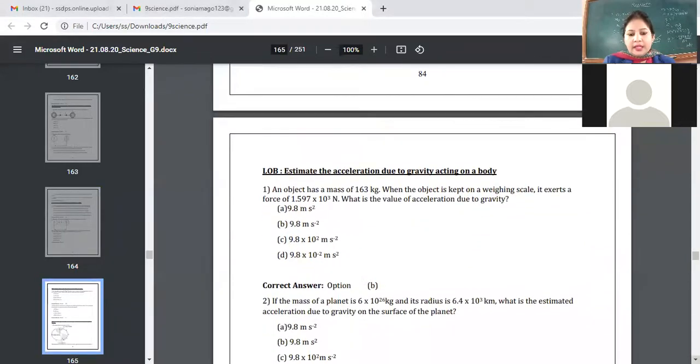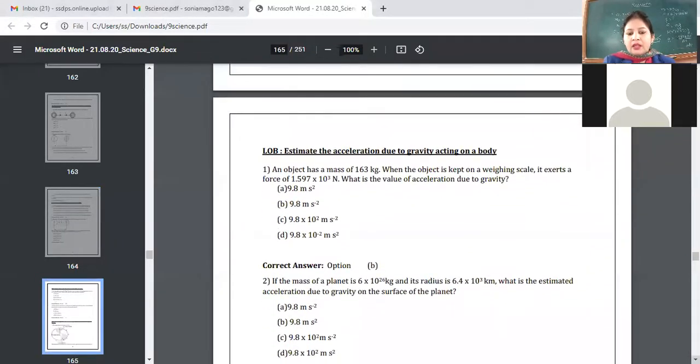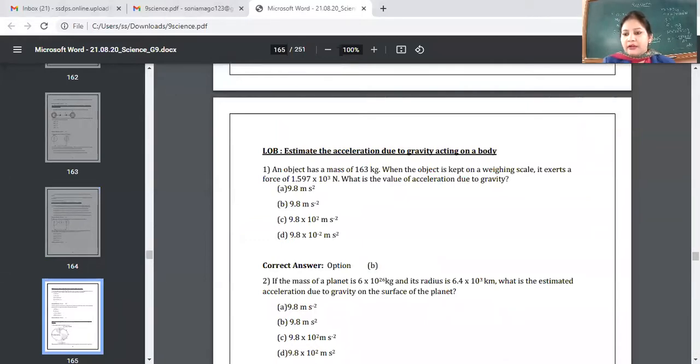Let's see next. Next, if mass of a planet is 6 into 10 raised to power 26 kg and radius is 6.4 into 10 raised to power 3 kilometers, what is the estimated acceleration due to gravity on the surface of the planet? Yes, who will tell me the formula now? Mass of the planet is given, we don't know which planet it is, we have to find acceleration due to gravity here.